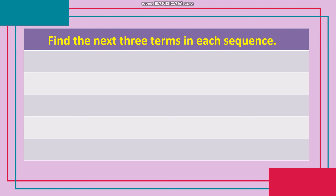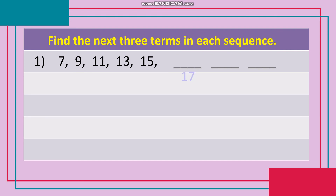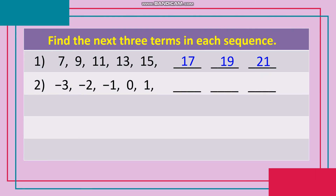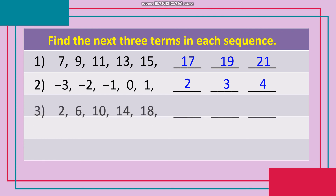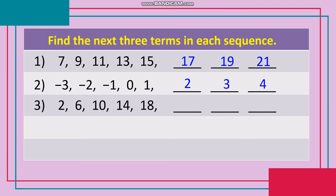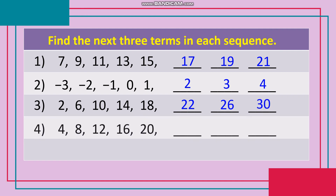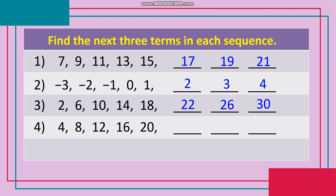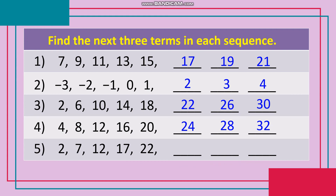Find the next three terms in each sequence. Number 1: 7, 9, 11, 13, 15 — answer: 17, 19, 21. Number 2: −3, −2, −1, 0, 1 — answer: 2, 3, 4. Number 3: 2, 6, 10, 14, 18 — answer: 22, 26, 30. Number 4: 4, 8, 12, 16, 20 — answer: 24, 28, 32. Number 5: 2, 7, 12, 17, 22 — answer: 27, 32, 37.